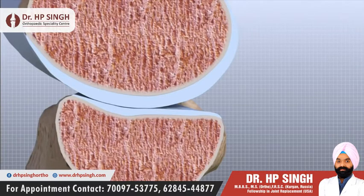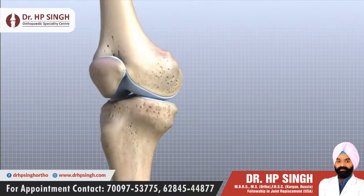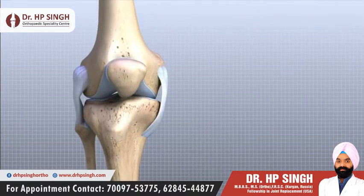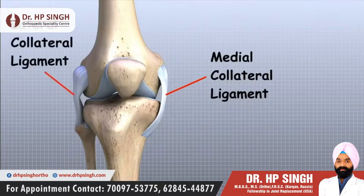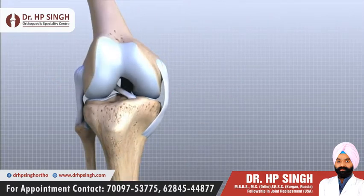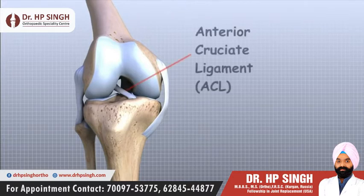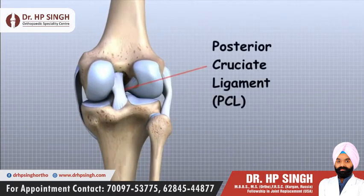We have articular cartilage essentially everywhere that two bony surfaces move against one another. In the knee, articular cartilage covers the ends of the femur, the top of the tibia, and the back of the patella. Ligaments are tough bands of tissue that connect the ends of bones together. Two important ligaments are found on either side of the knee joint: the medial collateral ligament or MCL and the lateral collateral ligament or LCL. Inside the knee joint, two other important ligaments stretch between the femur and the tibia — the anterior cruciate ligament or ACL in front and the posterior cruciate ligament or PCL in the back.